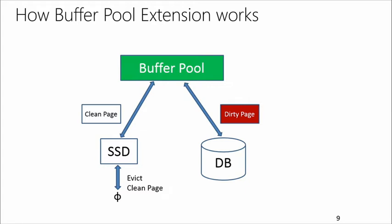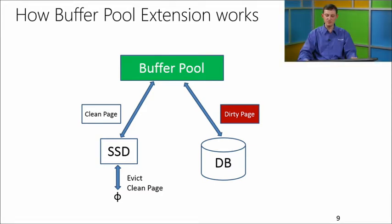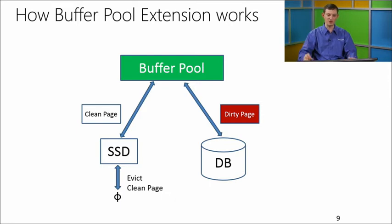When a page is dirty, we need to write it to the database file or log file first when evicting it. But if we think we have a chance to keep the page on the SSD extension file, we will try to write to both places at the same time. When the longer write to the database file completes — since most likely your database file is on a slower device — we would already have that page in the extension file. We call this operation dual writes, an optimization that helps us move things faster.